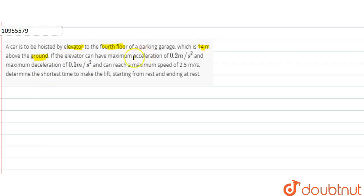If the elevator can have a maximum acceleration of 0.2 meters per second squared and a maximum deceleration of 0.1 meters per second squared and can reach a maximum speed of 2.5 meters per second, determine the shortest time to make the lift starting from rest and ending at rest.